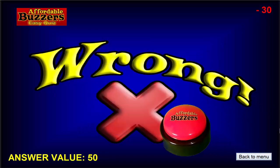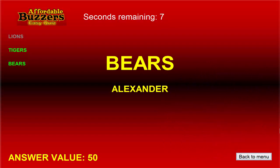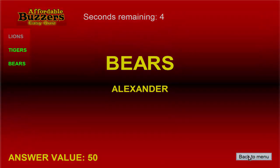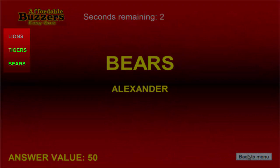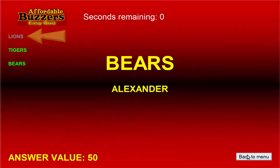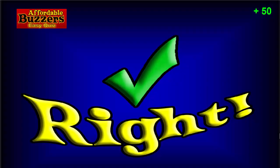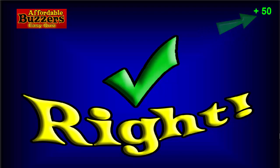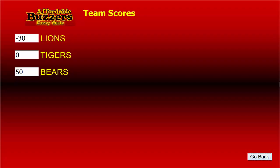So now Alex presses his buzzer. Team Bears appears along with Alex's name. Notice how in team play mode the status names column shows only the team names, and Team Lions, who already answered incorrectly, is grayed out. Alex gives the correct answer, so he's going to earn 50 points for the Bears. When we move on to the scores, we see only the three teams listed with their accumulated scores.